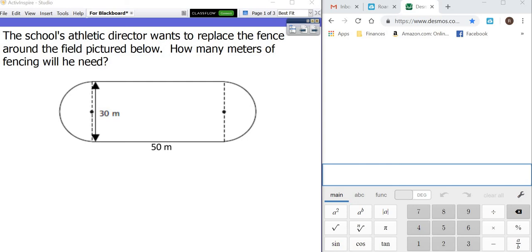Alright guys, so this is some practice for finding area of composite figures—that means things that are put together. This says the school's athletic director wants to replace the fence around the field pictured below. How many meters of fencing will he need?